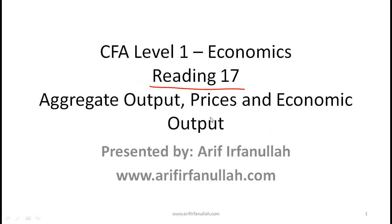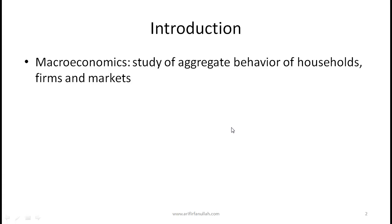We'll now start reading Chapter 17, which is on aggregate output, prices, and economic output. The general idea is that what we've done so far is microeconomics — the study of households, the interaction of households with firms, how firms decide how much to supply, and so on. Now we are moving into the realm of macroeconomics, which is the study of the aggregate behavior of households, firms, and markets. Economists, policymakers, and investors ultimately focus on macroeconomic variables.